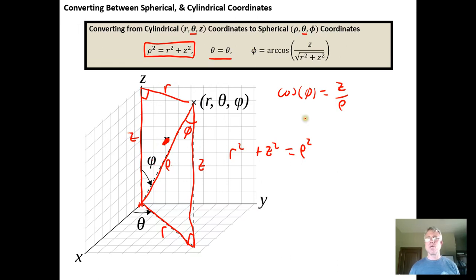So if we need to know what φ is we just take the arc cosine of both sides. So we get φ is equal to the arc cosine of z over ρ.